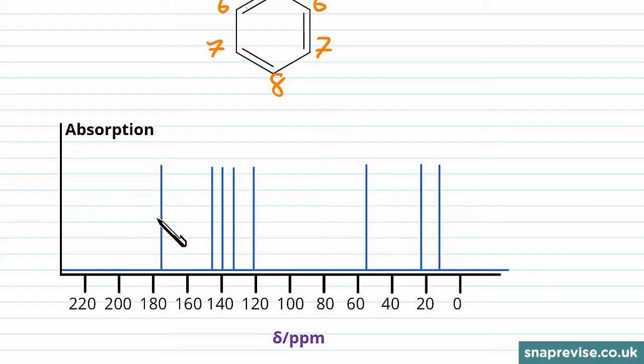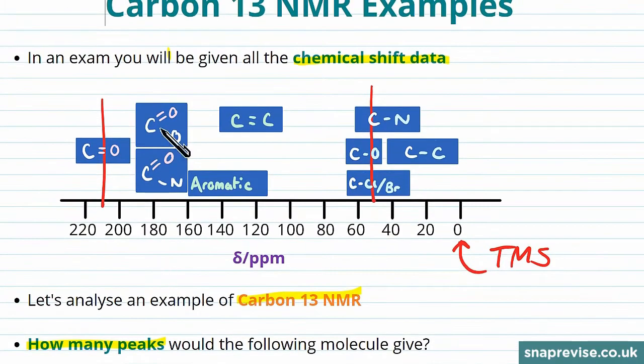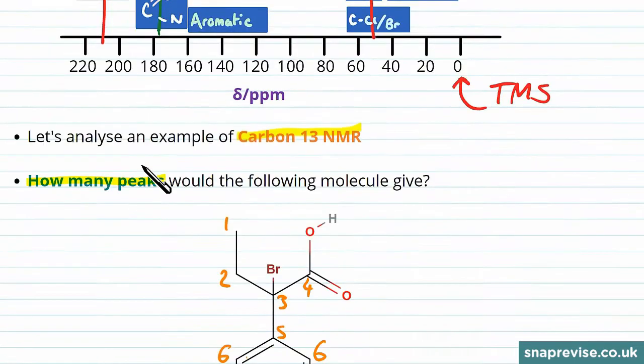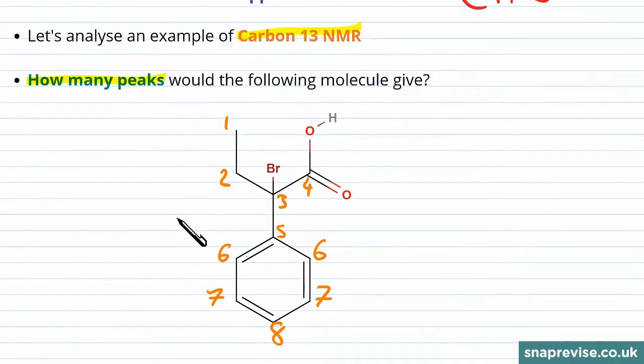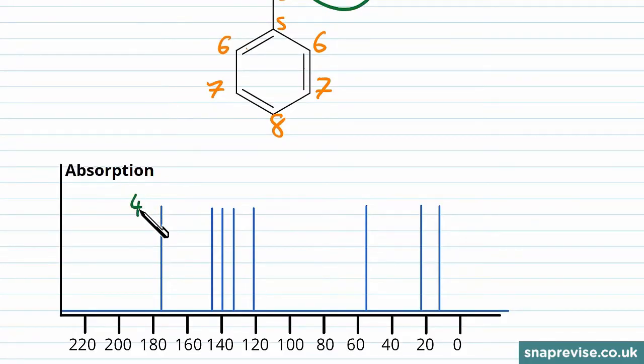This peak is far to the left near 180 parts per million on the shift. So if we look back to our table, which again you would have in an exam, we can see that around about 180 is where a carbon is double bonded to an oxygen and another electronegative compound like nitrogen or oxygen. So looking at our molecule, that's this carbon here, the one that's part of a carboxylic acid group. So we can label that on as four.